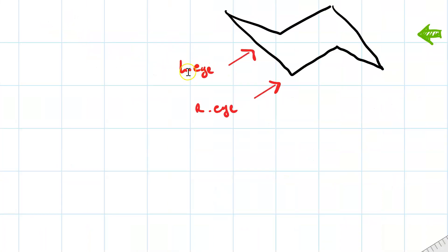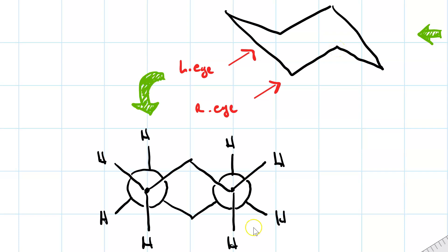Now, if we look at it from here, putting our left eye to look down this bond axis and our right eye to look down this bond axis, we can actually see a Newman projection. Here is what our Newman projection looks like.